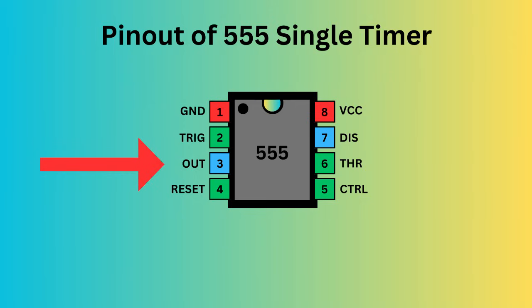Pin 3 serves as the output, providing the timer's operational result depending on its mode: monostable, astable, or bistable.